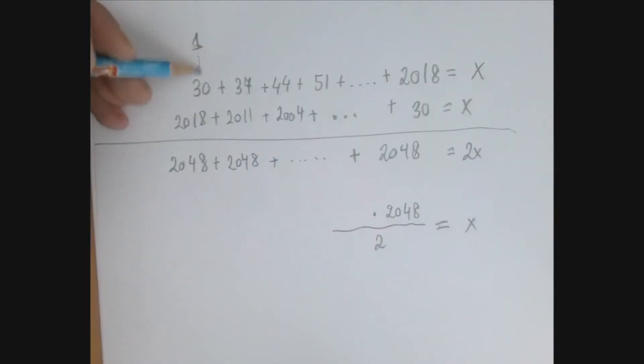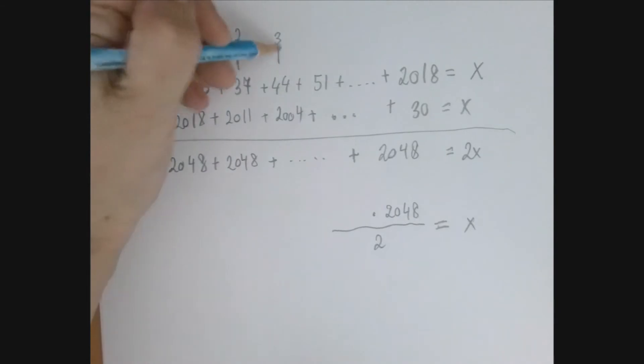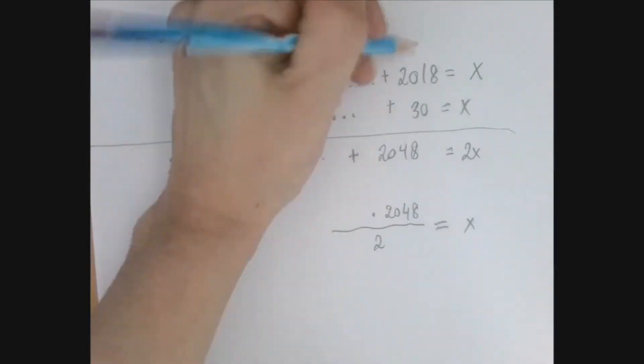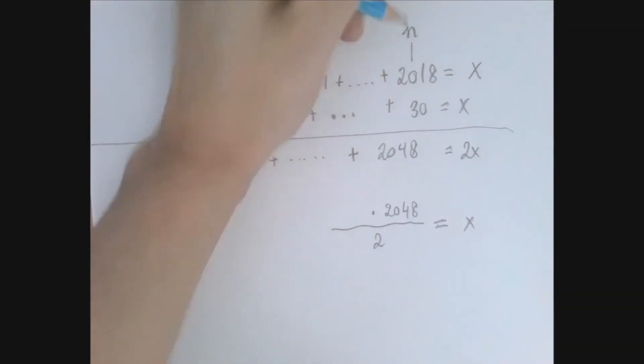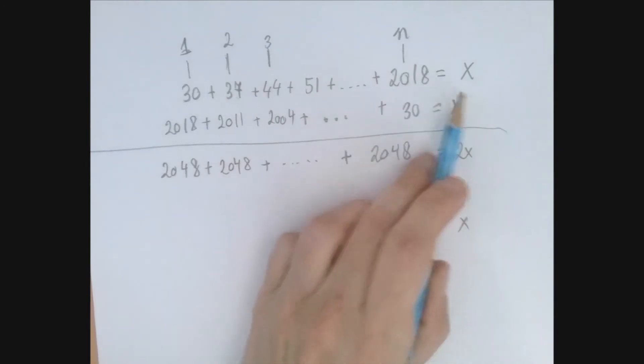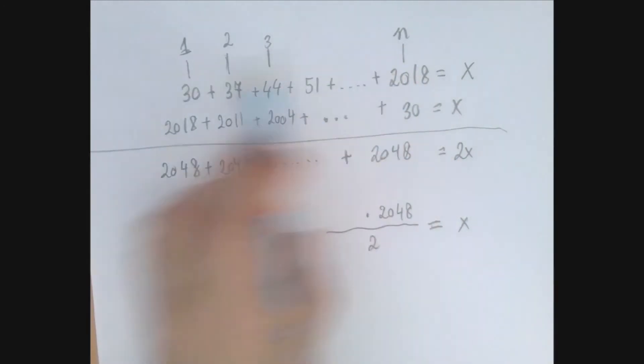So first, to 1, we want to associate 30. To 2, we want to associate 37. To 3, we want to associate 44. And if we could figure out what this association is, we could apply it backwards here. We cannot use x anymore because x is taken. So we're going to use n for the number of columns.